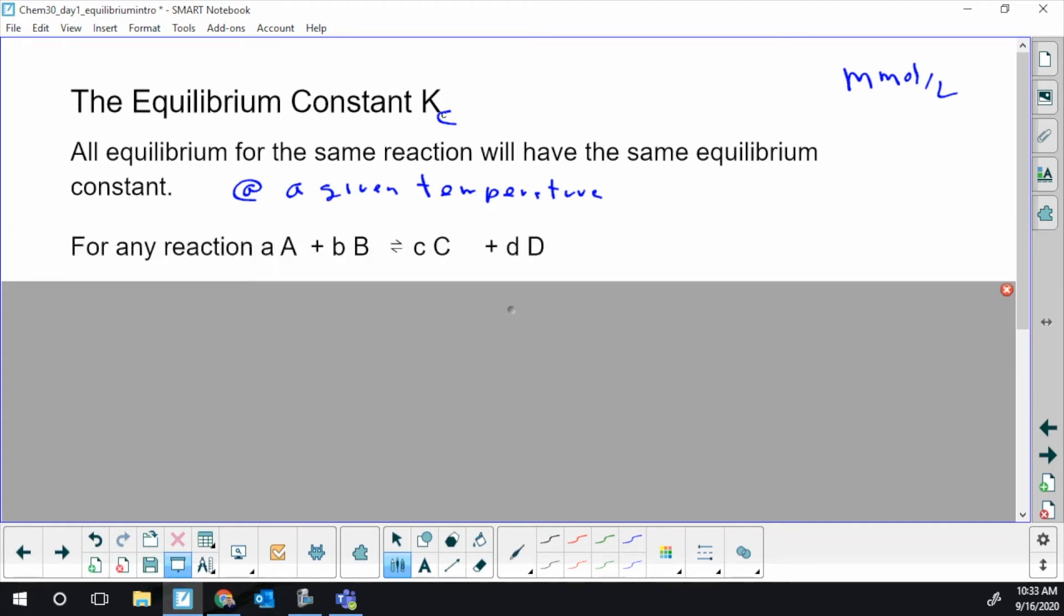For any reaction, here's my generic nomenclature: the little letters are stoichiometric coefficients and the big letters are chemicals. So a amount of A and b amount of B makes c amount of C and d amount of D.